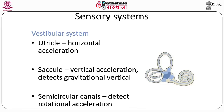The inner ear consists of the vestibular system and the cochlea. The cochlea is involved in audition. The vestibular system has otolith organs: the utricle, the saccule, and the semicircular canals. The utricle and saccule are sensitive to linear acceleration — the saccule to vertical acceleration and the utricle to horizontal acceleration.